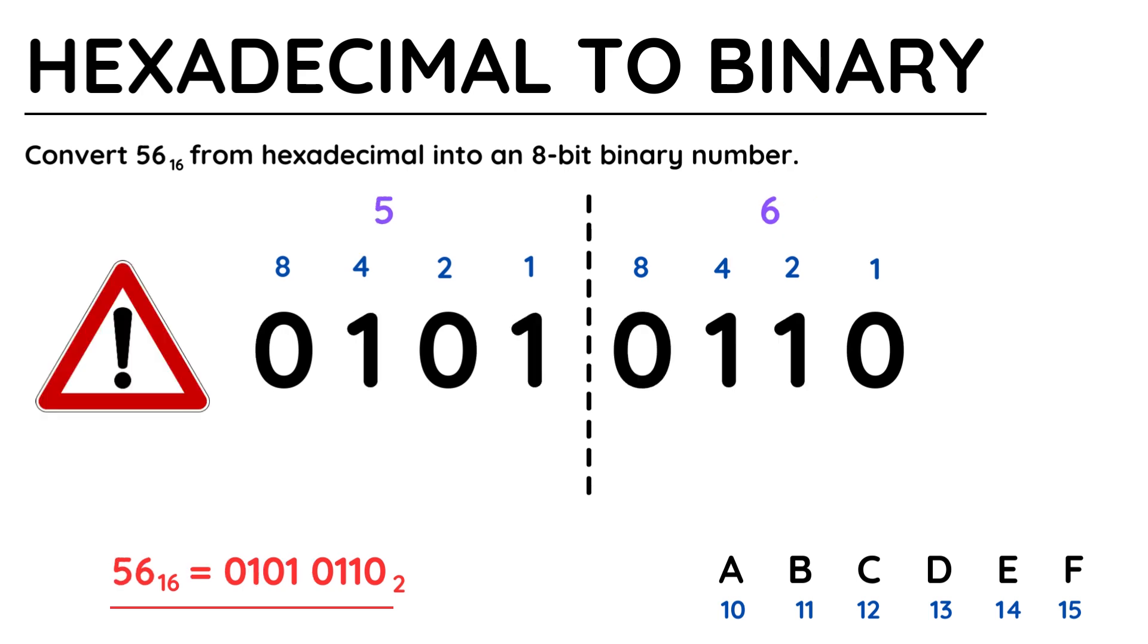Just a really important note, a hexadecimal value doesn't necessarily need to have a letter in it. In this example, 56 is being converted into binary, not 56. So read the exam question carefully to understand which number system you are being asked to use. It could also be 2 letters, such as EB or FF.